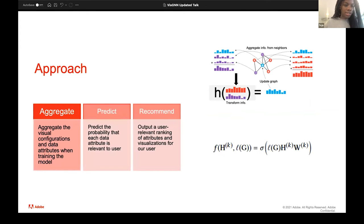So the first thing that we did was aggregate the visual... The approach of our methodology of this research has three main parts, which is aggregating, predicting, and recommending. The first part is aggregating visual configuration and data attributes when training the model. So in this step, we are essentially mapping every data attribute in each dataset to a shared meta feature space. And this enables us to learn from attributes that are statistically and semantically similar to those in the dataset of interest to the user. And this is the algorithm that was the basis of this work. And this is the visualization explaining how the aggregation step works.